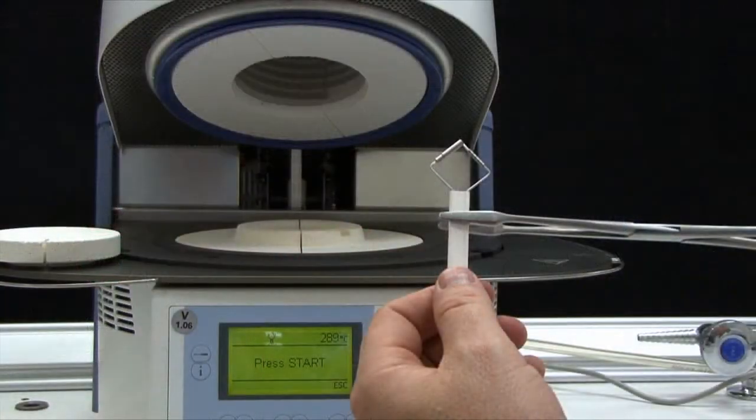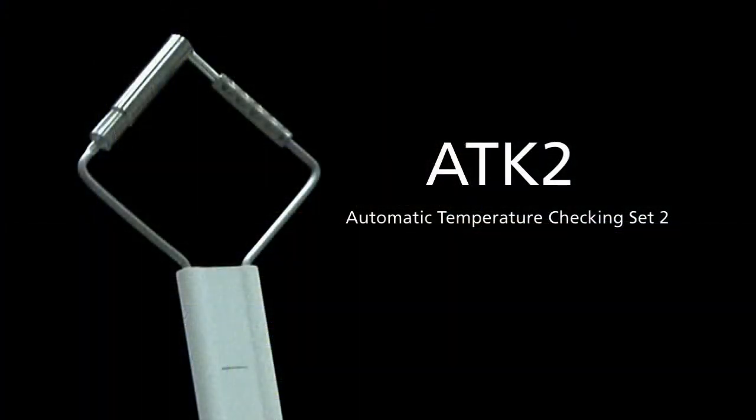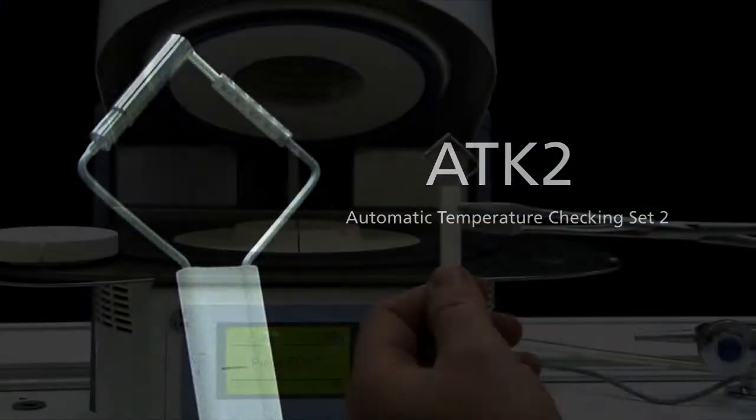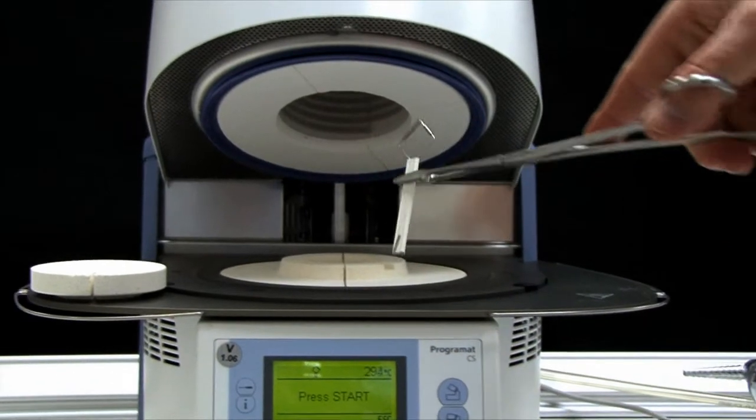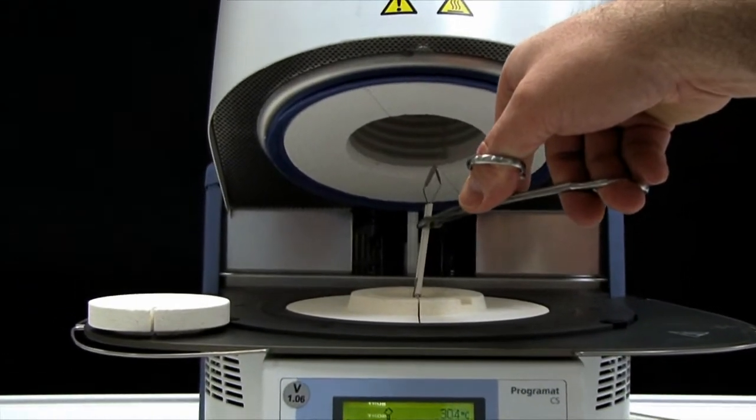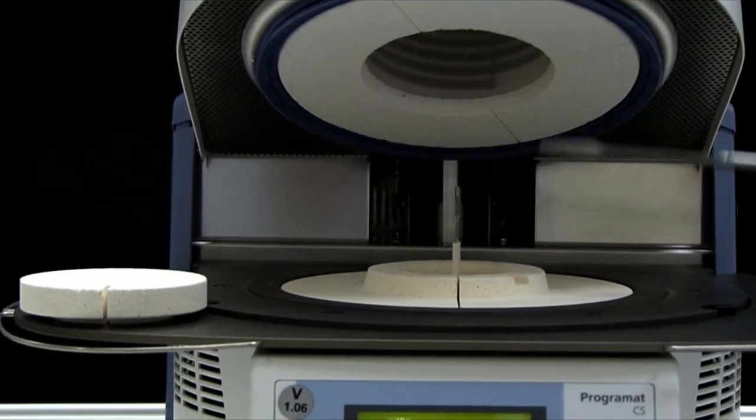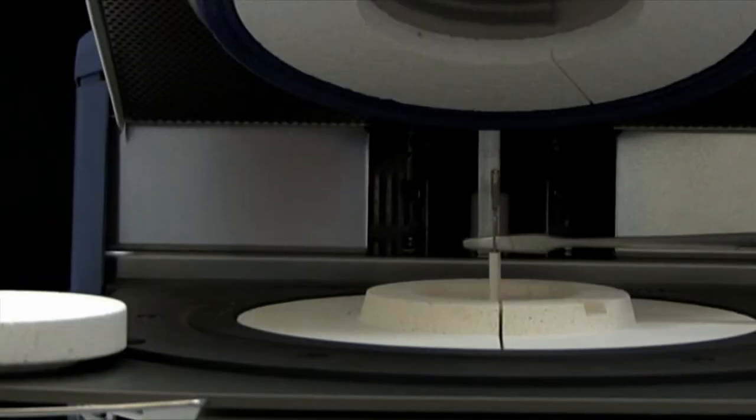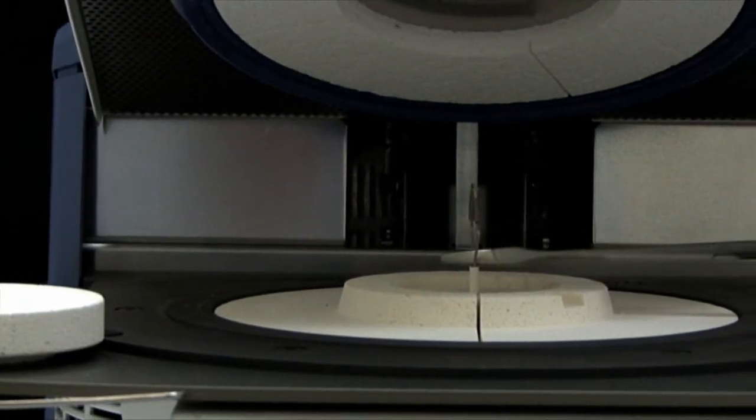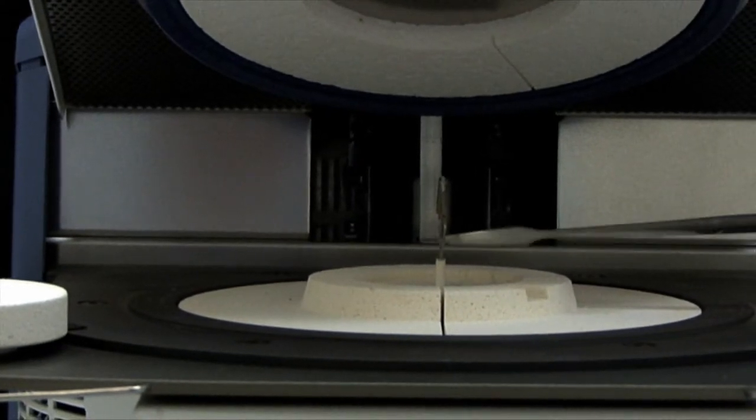Carefully grip the upper part of the Automatic Temperature Checking Set 2, otherwise known as the ATK2, with the furnace tongs and insert it into the hole until it snaps into place. If necessary, use the furnace tongs to apply slight pressure to the center of the ATK2 base until the sample clicks into place.